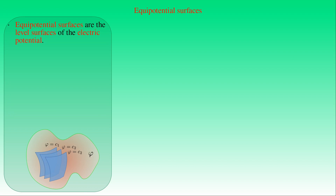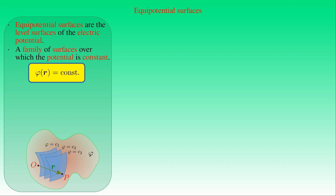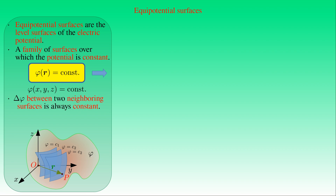We have already seen that the spatial distribution of electric potential can be illustrated with level surfaces called equipotential surfaces, over which the potential φ is constant. We normally draw equipotential surfaces with a density such that the potential difference between neighboring surfaces is constant. This convention allows us to deduce the magnitude of E from the density of equipotential surfaces, just as we do from field line density: the density of surfaces indicates the magnitude of the potential gradient (field strength), and closer equipotential surfaces imply a larger gradient or stronger electric field.